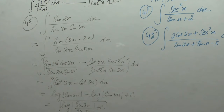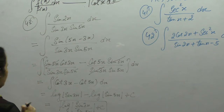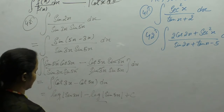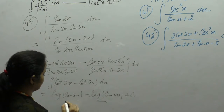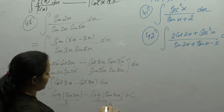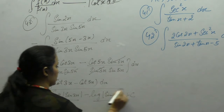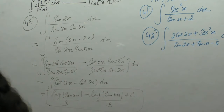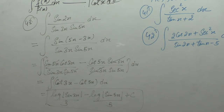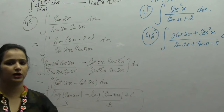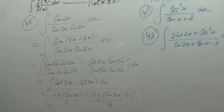log of sin 3x upon 3 minus log of sin 5x upon 5. By taking LCM of 3 and 5, we apply the formula log A minus log B = log(A/B), giving log of (sin 3x / sin 5x) plus c.